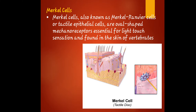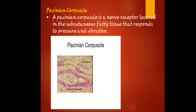Merkel cells, also known as Merkel-Ranvier cells or tactile epithelial cells, are oval-shaped mechanoreceptors essential for light touch sensation, found in the skin of vertebrates. Merkel cells are the receptors of touch — we can feel that someone is touching us because of the function of Merkel cells.